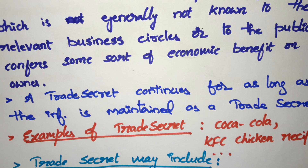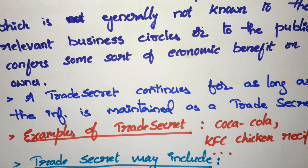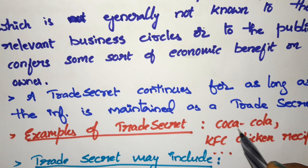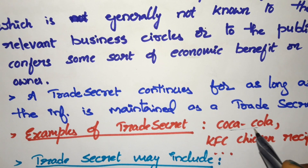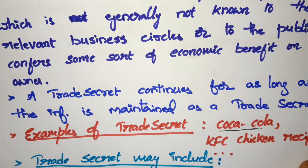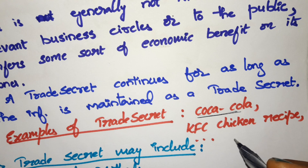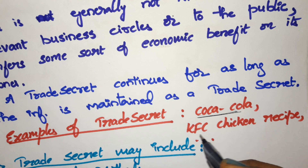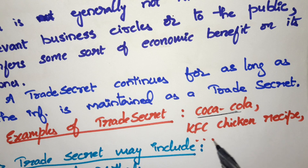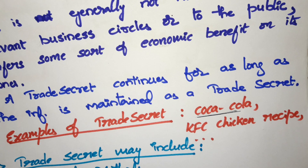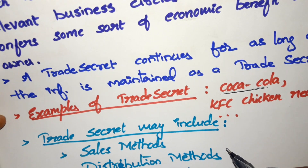Examples of trade secrets: Coca-Cola — whatever formula they are using, we don't know. KFC chicken recipe — whatever procedure they are using, we don't know. So some examples of trade secrets are Coca-Cola and KFC chicken recipe, and so on.